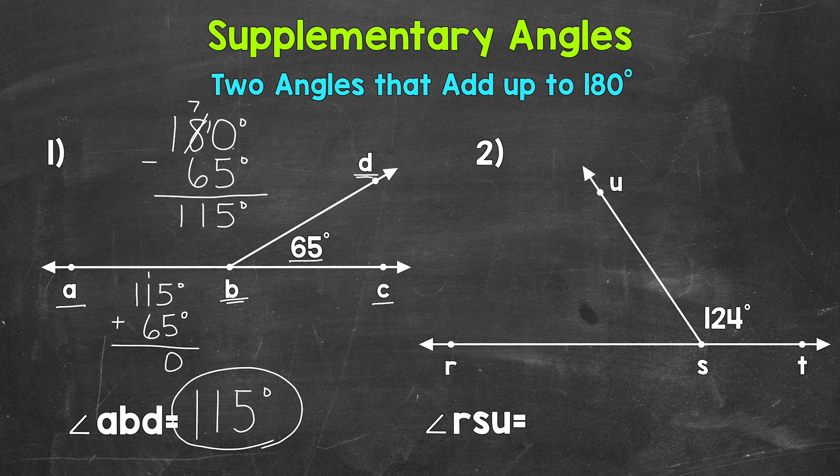1 plus 1 is 2, plus 6 is 8. And then we have a 1 in the hundreds place. So 180 degrees. 115 degrees was correct, and we are good to go.